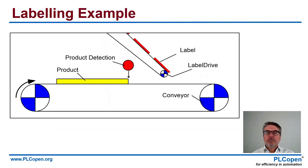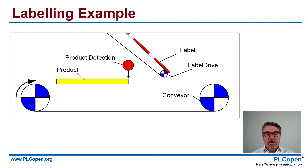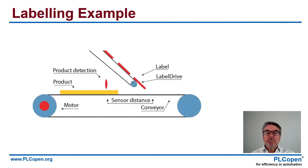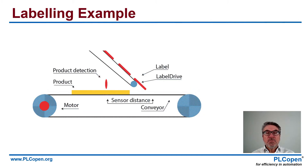Now let's look at the examples. The first example is a labeling example, where we have a product lying on a conveyor that is driven by a motor. It is transported from left to right, and we detect the front of the product and we want to put a label on it. So the label has a label drive, and when the product reaches the sensor distance, the label is put on. It moves from left to right, and with the same velocity as the product — the same velocity the conveyor is moving — we put a label on it.